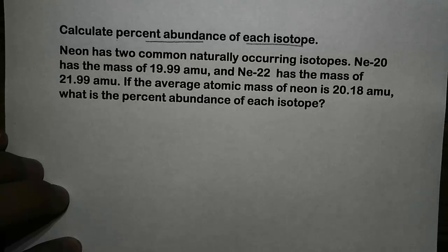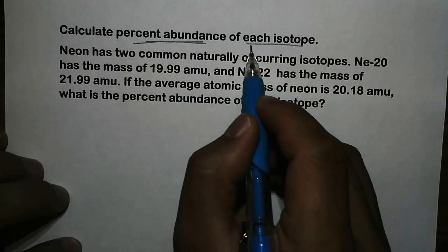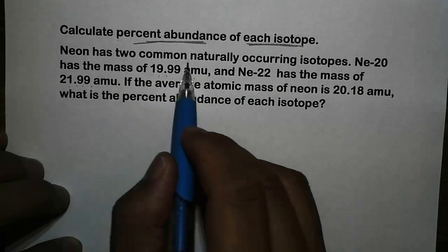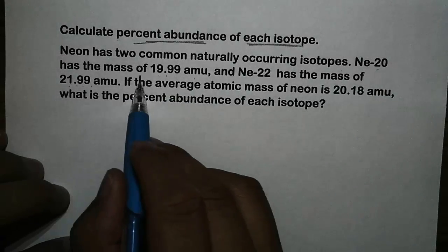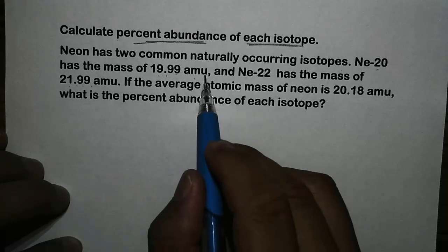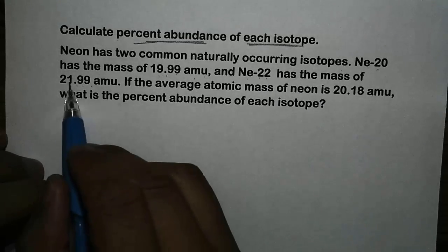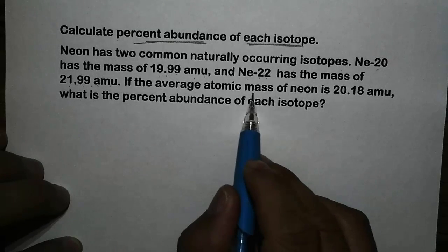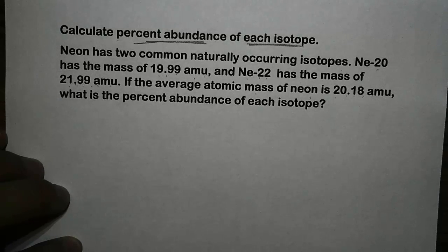In this video, we are going to look at how to calculate percent abundance of each isotope. In this problem, neon has two common naturally occurring isotopes. Neon-20 has the mass of 19.99 AMU, and neon-22 has the mass of 21.99 AMU. If the average atomic mass of neon is 20.18 AMU, what is the relative abundance of each isotope?